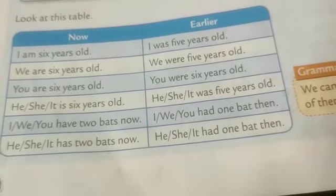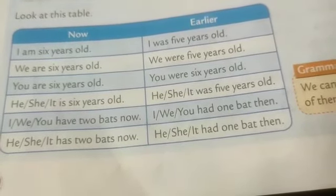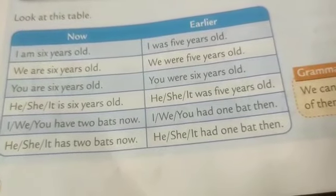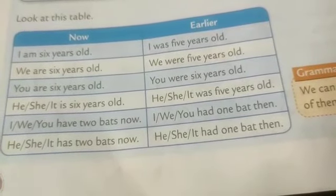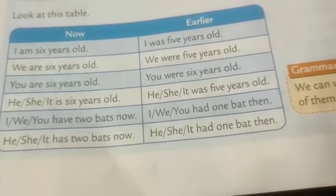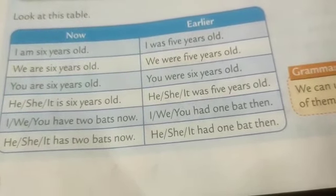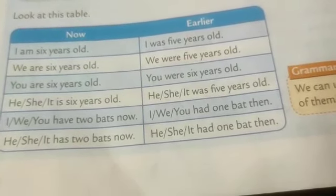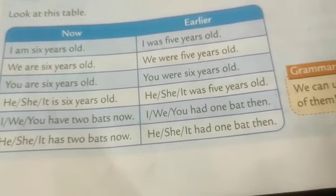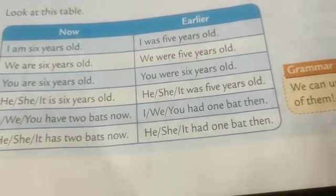He, she, and it — is 6 years old now; he, she, it was 5 years old then. I, we, you — have 2 bats now; I, we, you had 1 bat then.